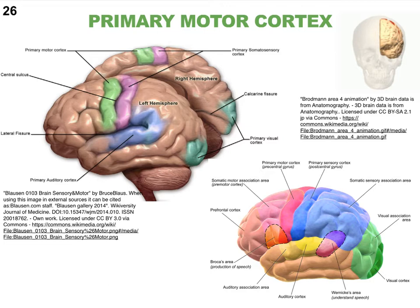We're going to set aside sensory inputs and now look at which areas of the cerebral cortex send information out to the body — motor output. We'll start with the primary motor cortex. I always need three-dimensional images, and some of you who can't think three-dimensionally should follow the link for a rotating brain image to better visualize all these colored areas.